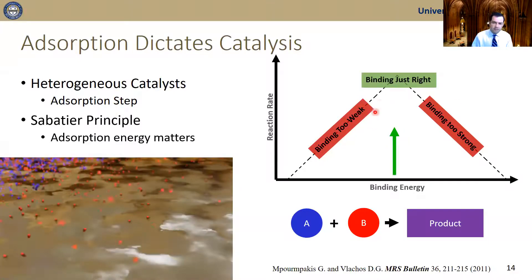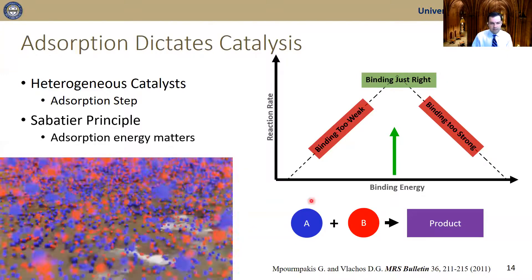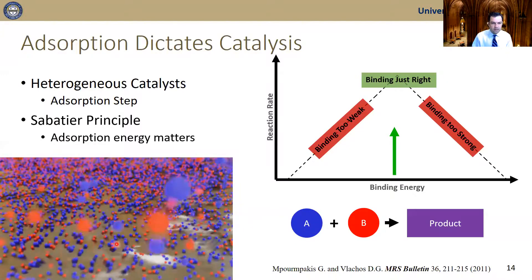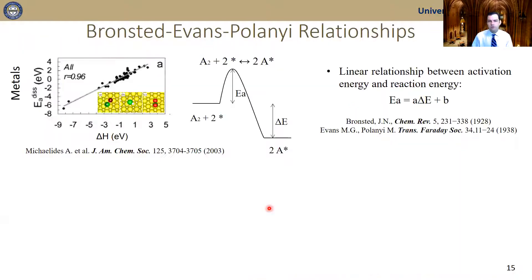However, when you have the perfect binding — the 'just right' binding — both reactants, the blue and the red, can reside on the catalyst surface, they can meet each other, they can react, and you can have products. This is a qualitative picture of catalysis through the Sabatier principle, but we also have a quantitative picture which comes from the Brønsted-Evans-Polanyi relationship, the so-called BEP relationships.